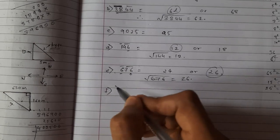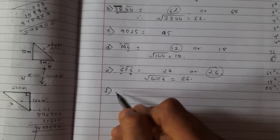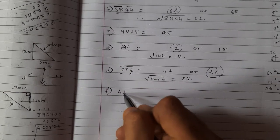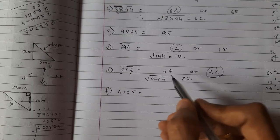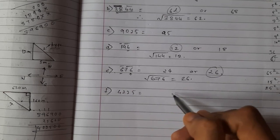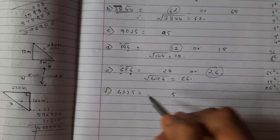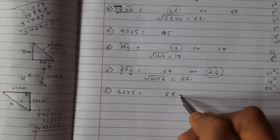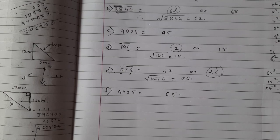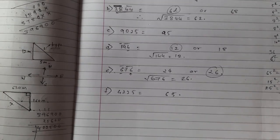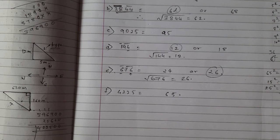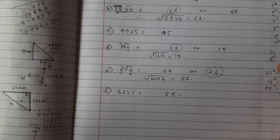Last sum of this exercise: 4225. Directly we can write units digit 5. And 6×7 = 42, so the square root is 65. Like this, you have to estimate the square root — very simple method that you can easily remember.